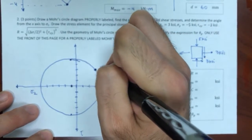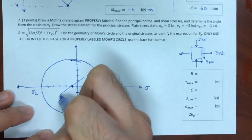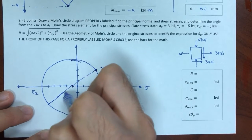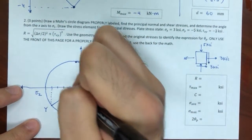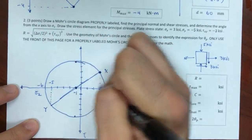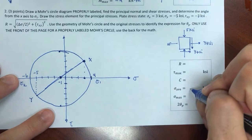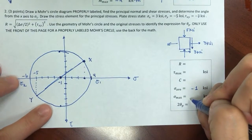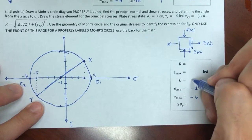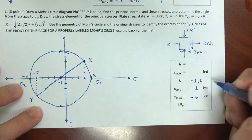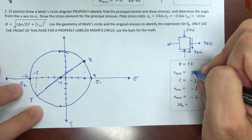So I label the diagram: the x-point is at (3, −3) and the y-point is at (−5, +3). Reading off the values: σ_avg (center) = −1, sigma_1 = +4 ksi, sigma_2 = −6 ksi, tau_max = ±5 ksi. The circle has radius 5, centered at −1 comma 0.